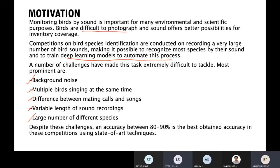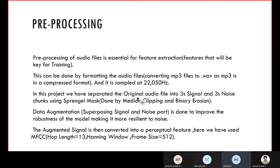Despite these challenges, an accuracy of 80-90% is the best obtained in these competitions using state-of-the-art equipment. Pre-processing of audio files is essential for feature extraction, as the generation of good input features is vital to neural network success. The first step is to convert MP3 files to wave files, as MP3 is a compressed format, and sample it at 22,050 Hz.